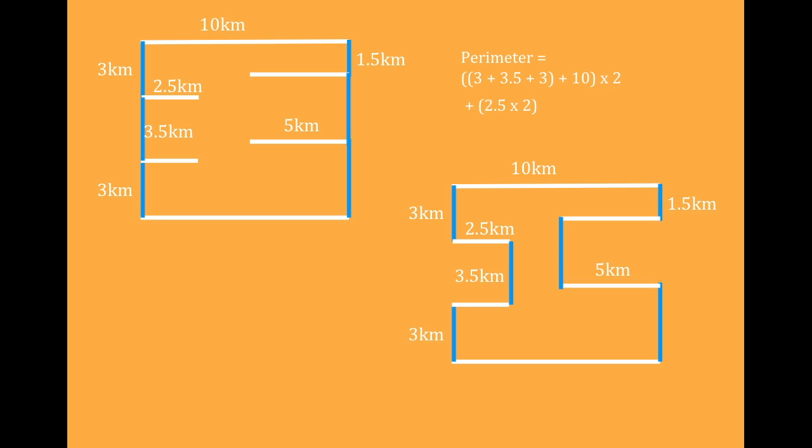So 2.5 and 2.5 that go there and then we'll have to include the 5 and the 5 that are jutting in. Now when you add that all together we'll get the perimeter of this funny little shape over to the right. And you should get 54.